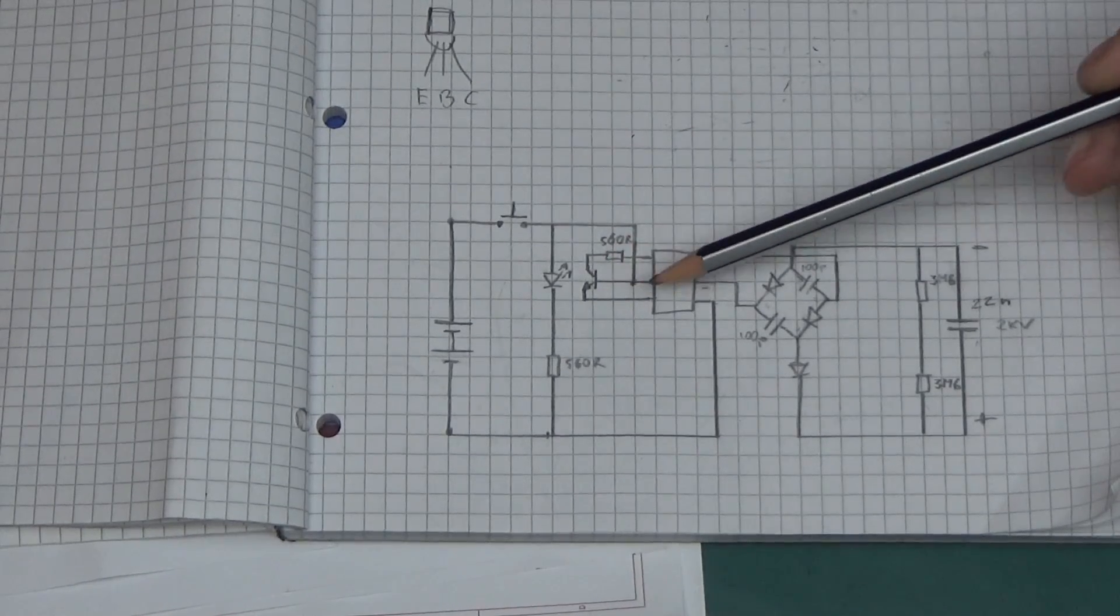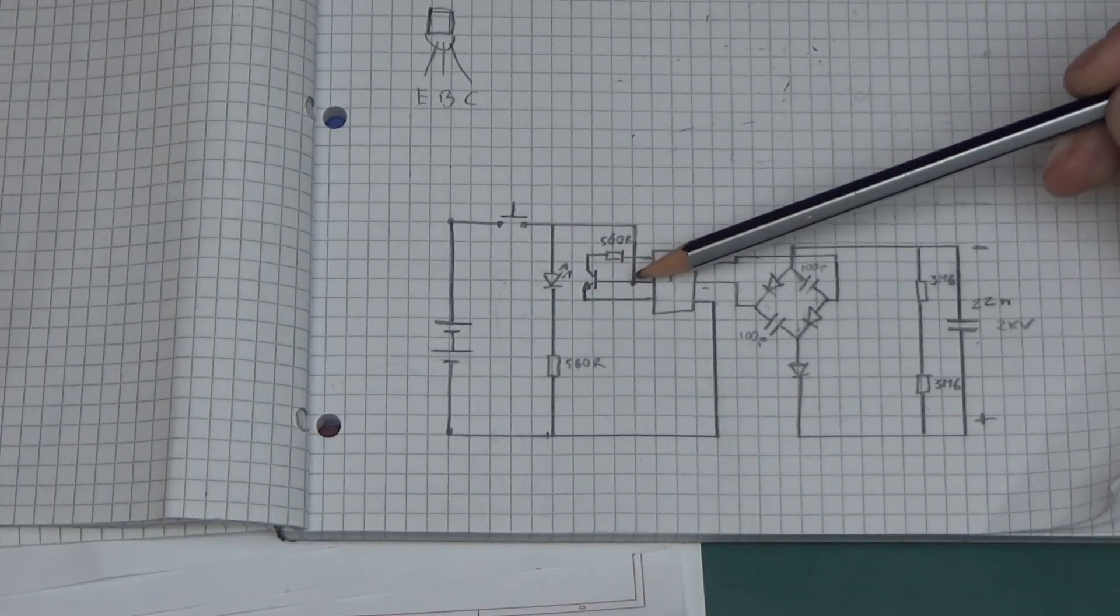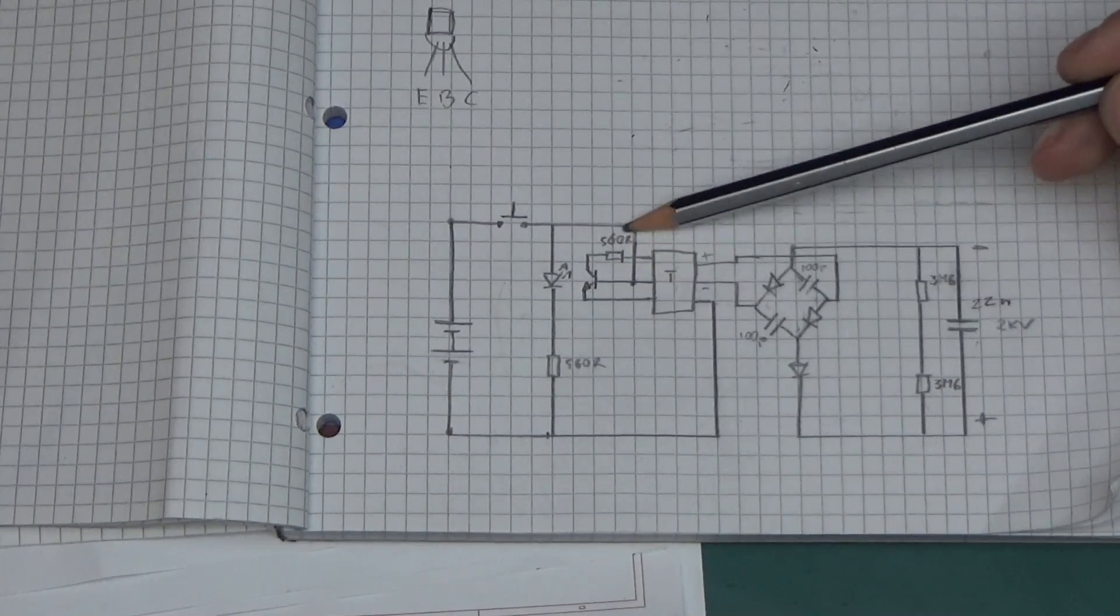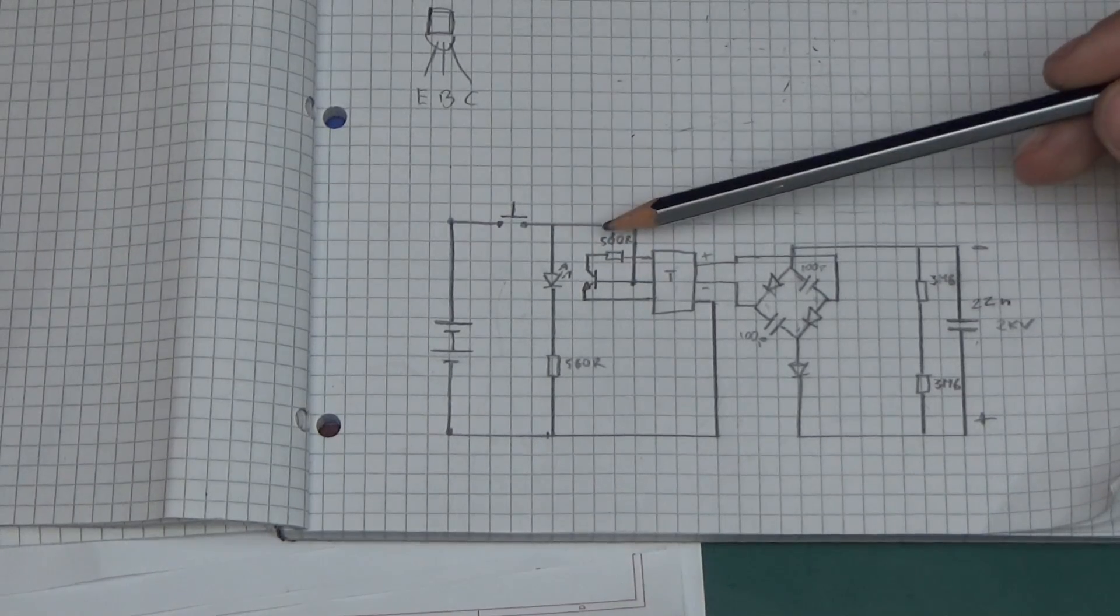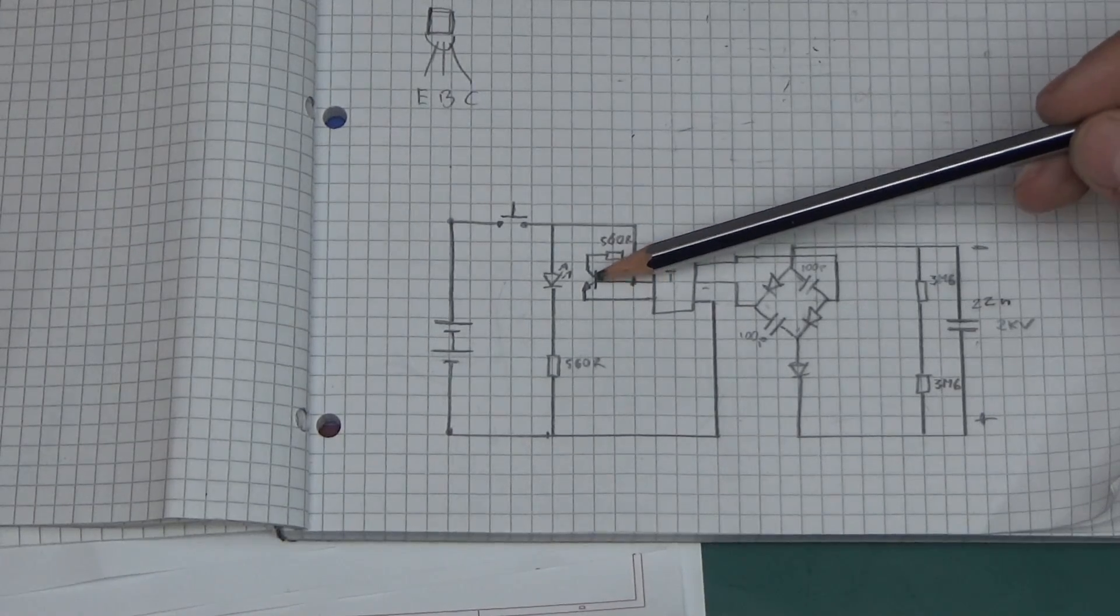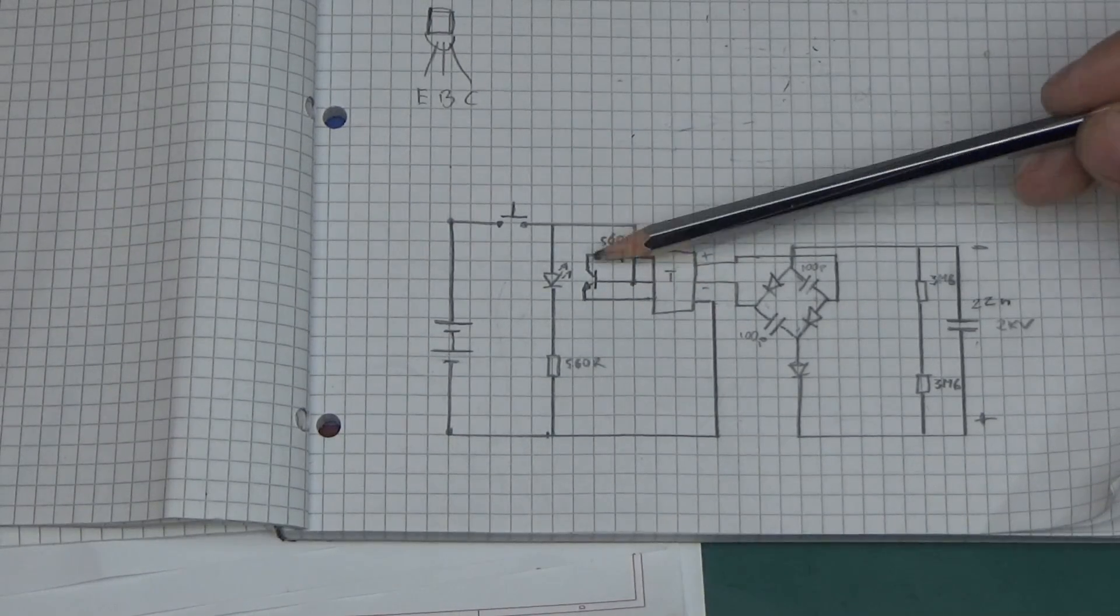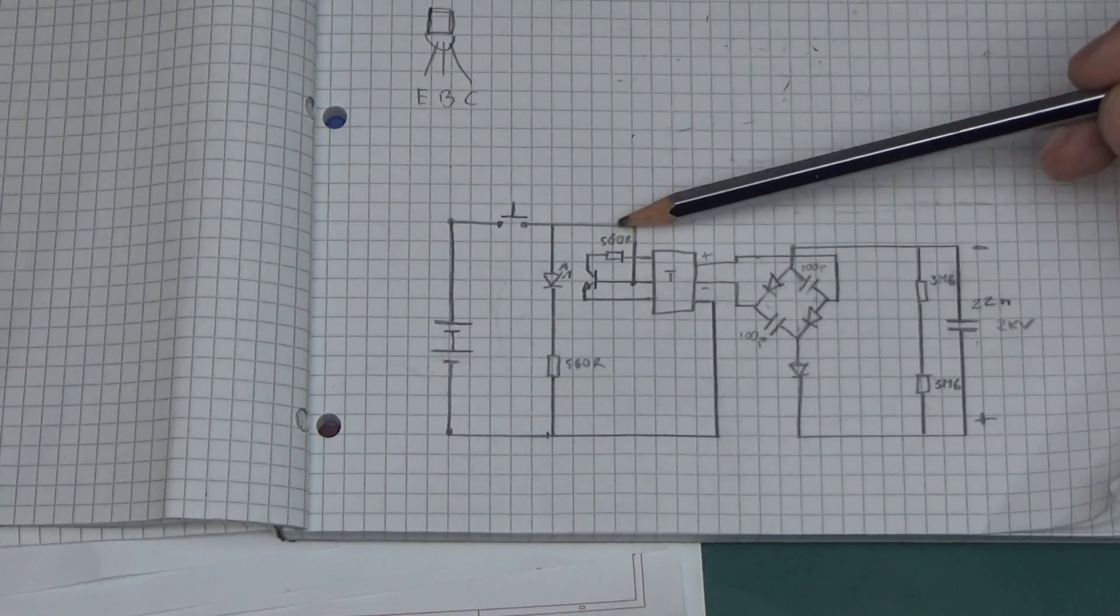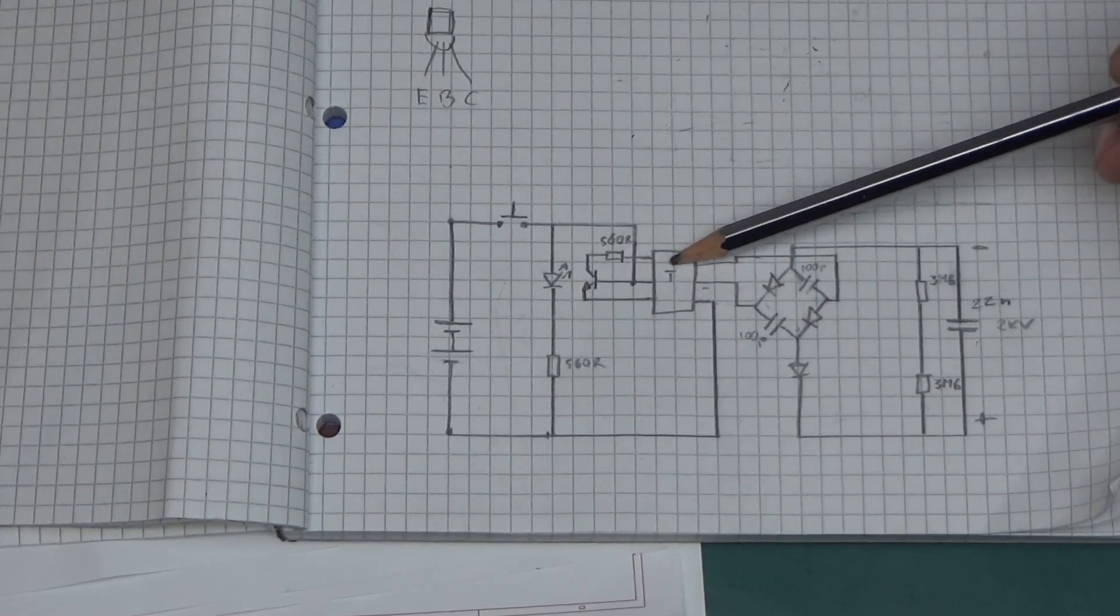The transformer is connected to a transistor. The base goes directly to the positive and that's unusual, but I guess they're relying on the internal resistance of the batteries not to kill this transistor. Then the collector goes through another 560 ohm resistor into the transformer.